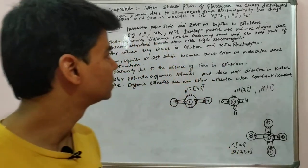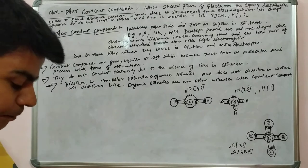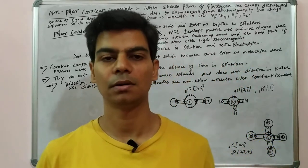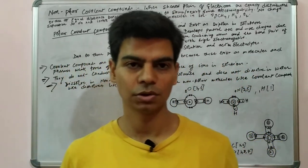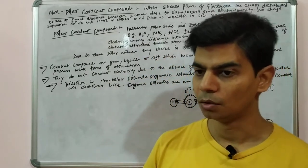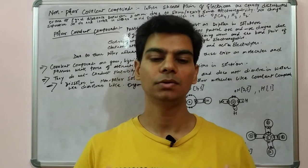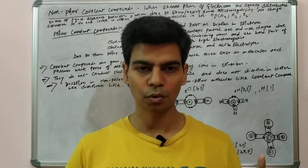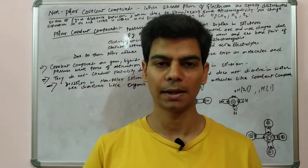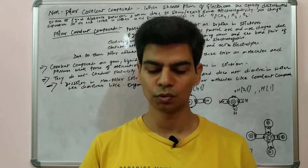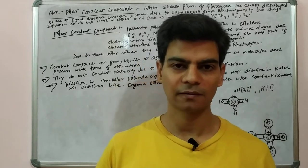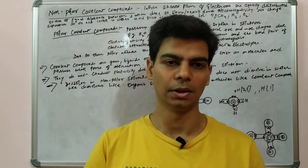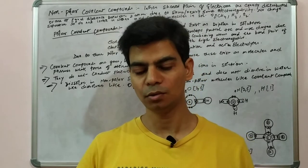When you pass electric current through it, it will conduct electricity. In case of non-polar covalent compounds — like oxygen, chlorine, and hydrogen — what happens is that in a chlorine molecule (Cl2), both chlorine atoms have the same electronegativity of 3. Both atoms attract the shared pair of electrons equally, so the shared pair sits exactly in the middle of the chlorine molecule, not towards either atom.